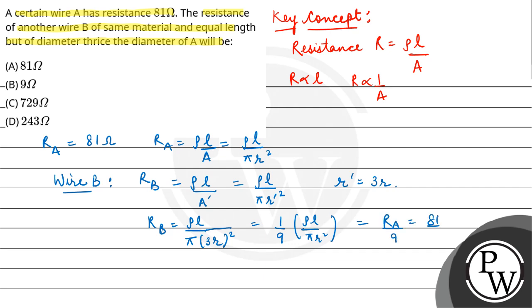And R A is equal to 81, so R B equals 9. Our final answer is option B: 9 ohm. Hope you understood it well. Best of luck.